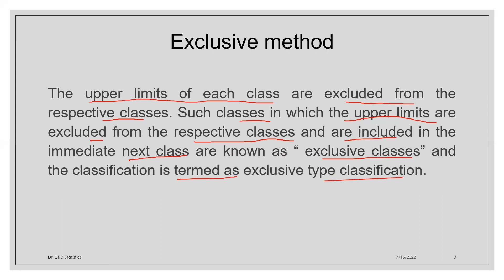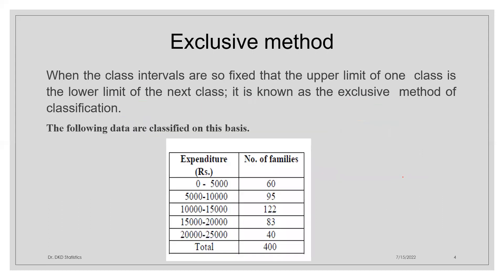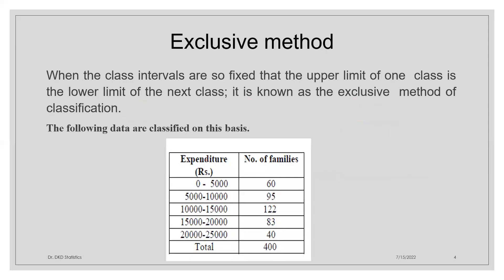We will understand with the help of an example. We can see when the class intervals are fixed such that the upper limit of one class is the lower limit of the next class. Once we are going to group the data, if we are getting this value, this value will not be included here — the 5000 value will be included in the next class. That is the meaning of the lower limit of the next class. It is known as the exclusive method of classification.